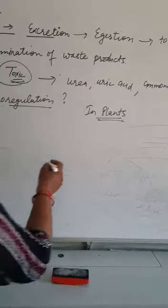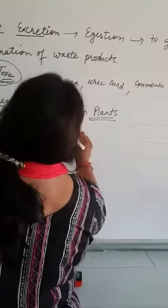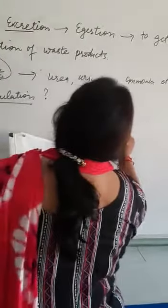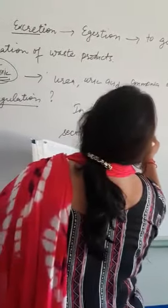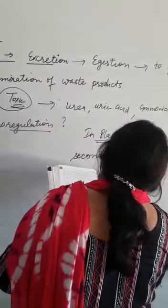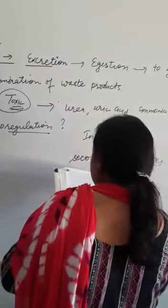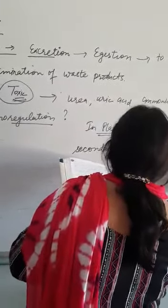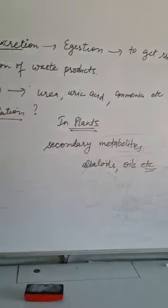These other waste products are called secondary metabolites. Examples include alkaloids, aromatic oils, etc. These are the secondary metabolites.